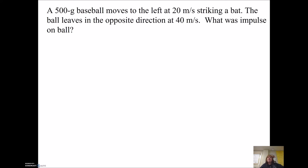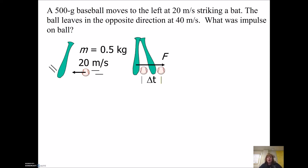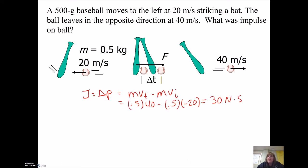One last question for you. I have a 500 gram baseball that's moving to the left at 20 meters per second and hitting a bat, and then it leaves in the opposite direction at 40 meters per second. What's the impulse applied to the ball? Pause this video. See if you can figure this out. Well, impulse equals a change of momentum. My final momentum is 0.5, the mass of the ball, because remember you have to do it in kilograms, times 40. And then we're going to subtract the initial momentum, which is negative, because it's going to the left. So we're actually adding those momentums together, and we get 30 newton seconds. Don't ever forget that momentum's a vector. So if it's moving in the opposite direction, one of those has to be negative.